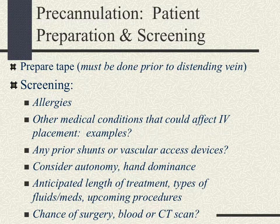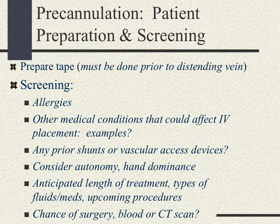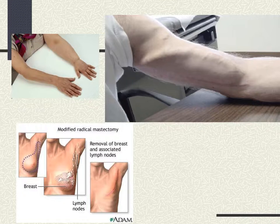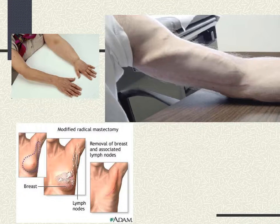Think about how long the treatment will be, the types of fluids and medications, and any upcoming procedures — the potential for surgery, blood transfusion, or a CT scan — so that you have the appropriate equipment in place. This slide shows visual depictions of why you want to avoid certain areas. The top left picture shows a patient with lymphedema following a mastectomy or lymph node removal, so we definitely want to avoid that extremity. The picture below shows what a modified radical mastectomy looks like, and the reason lymphedema occurs is that those lymph nodes are removed, eliminating drainage in that extremity.